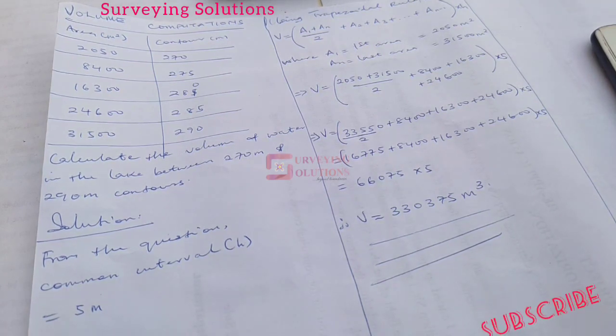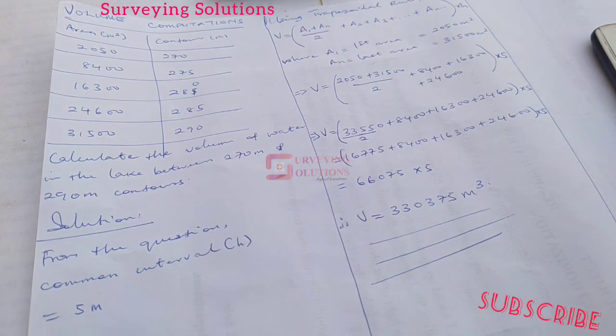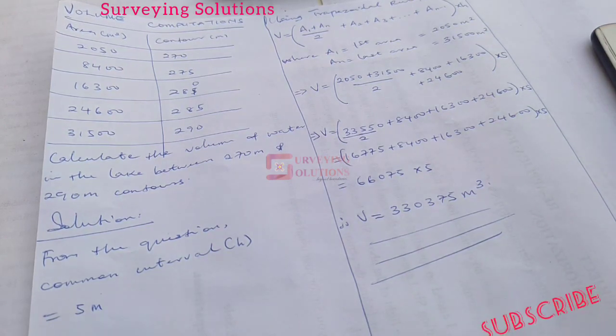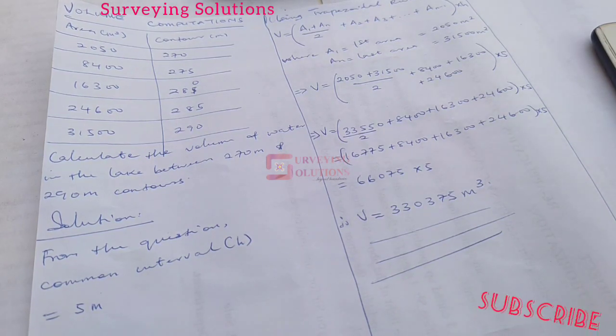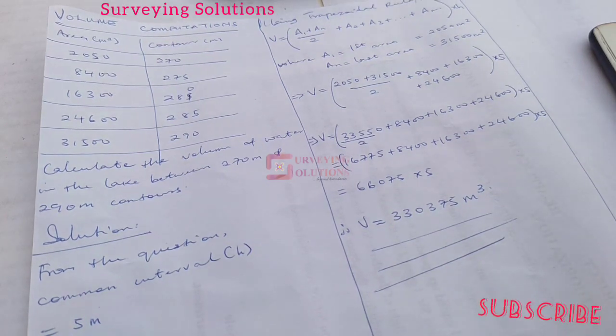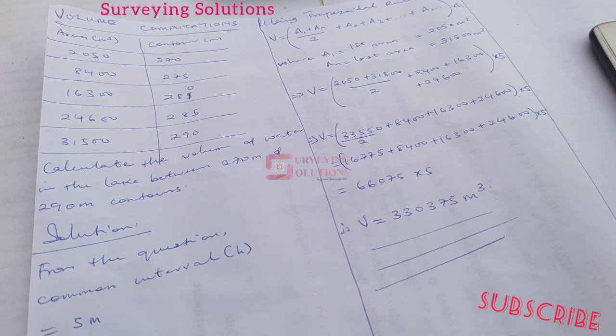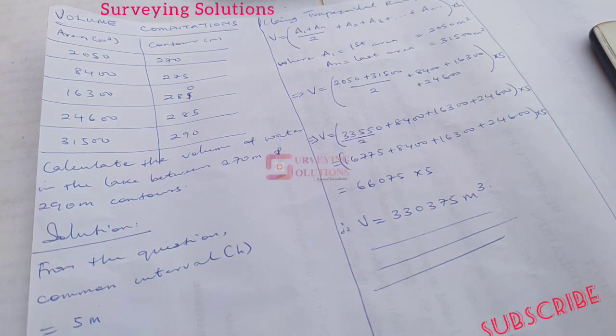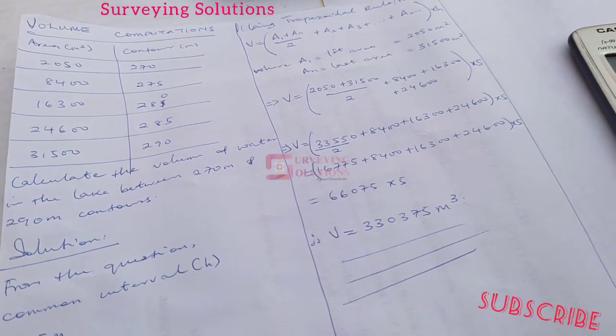Now from the question, we have seen that the common interval h is 5 meters. How do we get the common interval? The common interval is actually the difference between the successive contour values. We have 270 and 275, and the difference is actually 5. We have 275 and 280, that's actually 5. So 285 and 290. We can see that our common difference is 5. That's the first deduction we have from the question.